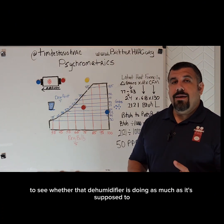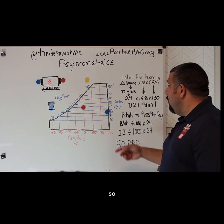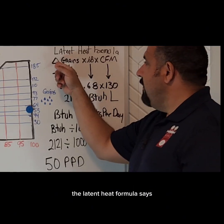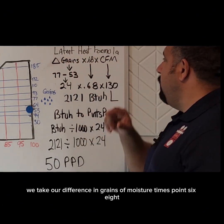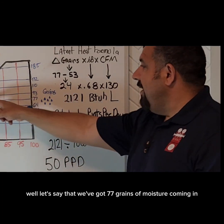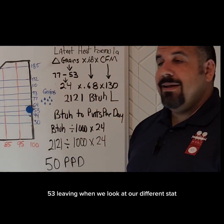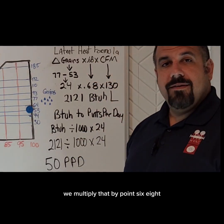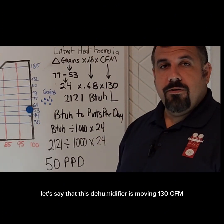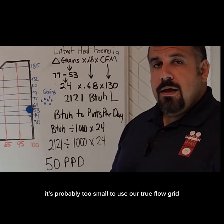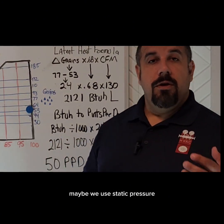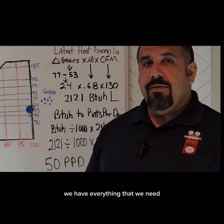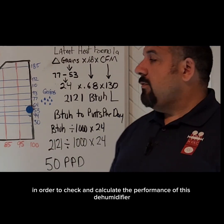Let's actually calculate to see whether that dehumidifier is doing as much as it's supposed to. We've got to figure out what our difference in grains of moisture is, because we're going to use the latent heat formula. The latent heat formula says we take our difference in grains of moisture times 0.68 times our CFM. We've got 77 grains of moisture coming in and 53 leaving — that's a 24 grain difference. We multiply that by 0.68. Let's say this dehumidifier is moving 130 CFM. We're going to need to measure that somehow — it's probably too small to use our true flow grid; maybe we use static pressure and check it against the manufacturer's information. Either way, let's say we read 130 CFM. We have everything we need to calculate the performance of this dehumidifier.